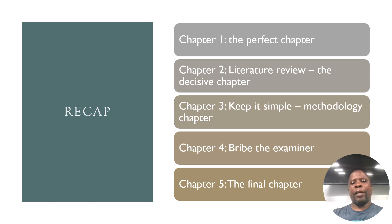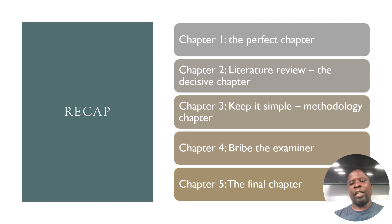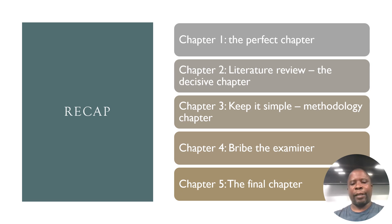Just as a recap: chapter 1, which I titled 'the perfect chapter,' urged you to make sure that chapter is actually perfect and well written — it's the first impression you give the examiner. If you haven't watched that video, go and watch it. Then chapter 2, the decisive chapter about literature review. Then chapter 3, keep it simple — research methodology. I also talked about chapter 5, the final chapter, emphasizing the importance of making it final. Today I will talk about chapter 4: data presentation, covering both presentation and analysis.